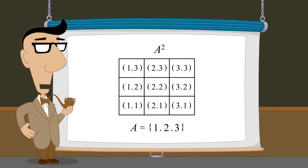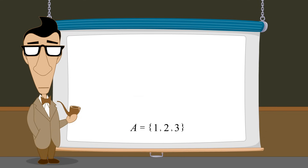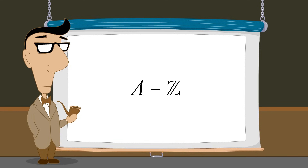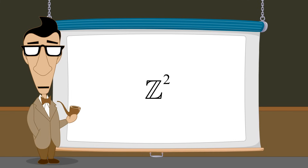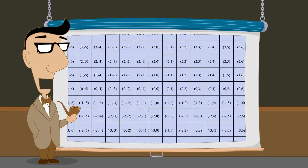Set A does not have to be a finite set of numbers. We can also create Cartesian products of infinite sets. For instance, set A could be the set of integers Z. Forming a Cartesian product of the set of integers with itself creates an infinite set of ordered pairs Z-squared, whose elements are every possible combination of two integers. Of course, we would need an infinitely large grid to represent all the ordered pairs in Z-squared. Instead of writing every ordered pair, each ordered pair can be represented by its position in the grid, each pair corresponding to a unique point.